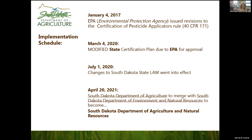Looking at the implementation schedule of some of these federal and state laws: in 2017 is when the rules at the federal level went into effect. Then South Dakota had a few years to get its plan updated and submitted to EPA, which happened in March of 2020. Some of the new laws went into effect July 1st, 2020. Also, on April 20th of this year, the South Dakota Department of Ag is going to merge with the South Dakota Department of Environmental and Natural Resources. After April 20th, the branding will be South Dakota Department of Agriculture and Natural Resources.